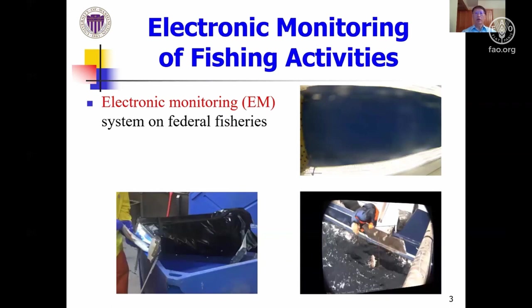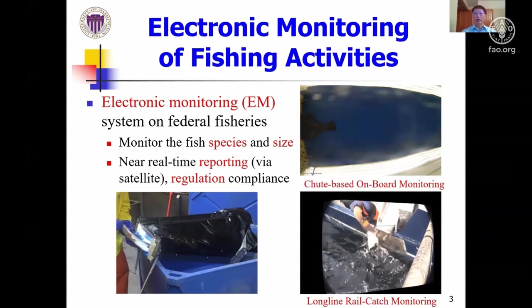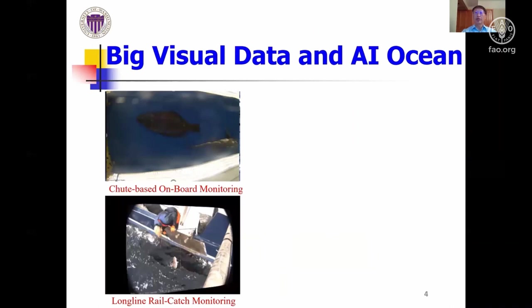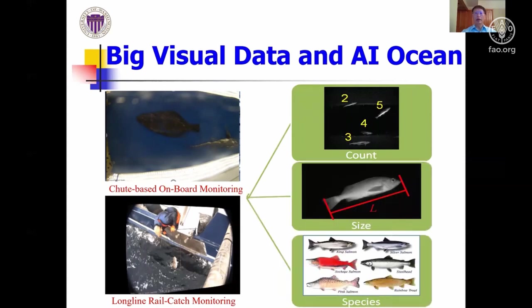The purpose of electronic monitoring of fishing activity is to systematically survey the fish species and sizes during the fish catching, either with shooter-based onboard monitoring or long-line rail catch monitoring, so as to achieve real-time reporting and regulation compliance. With the collected visual data, we aim to achieve fish counting, length measurement, and species identification during the catching activity using visual data from onboard cameras.